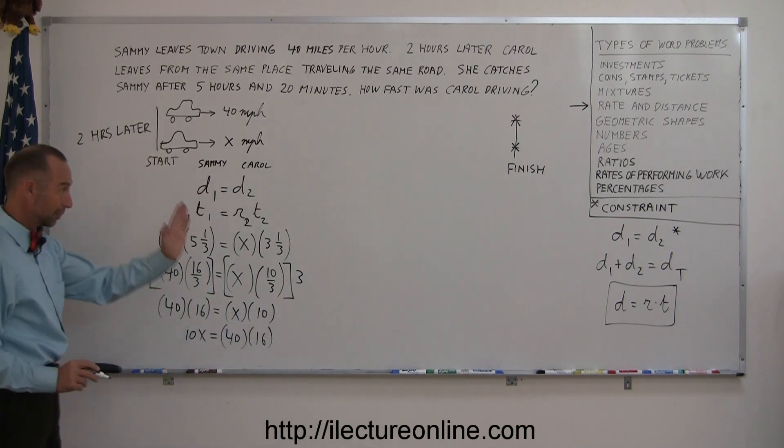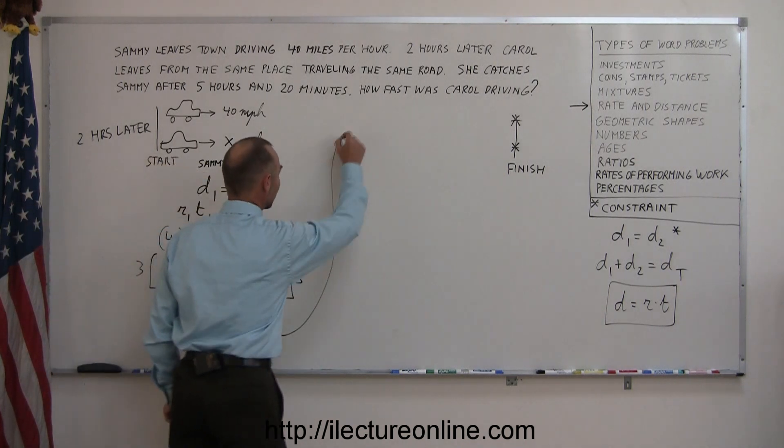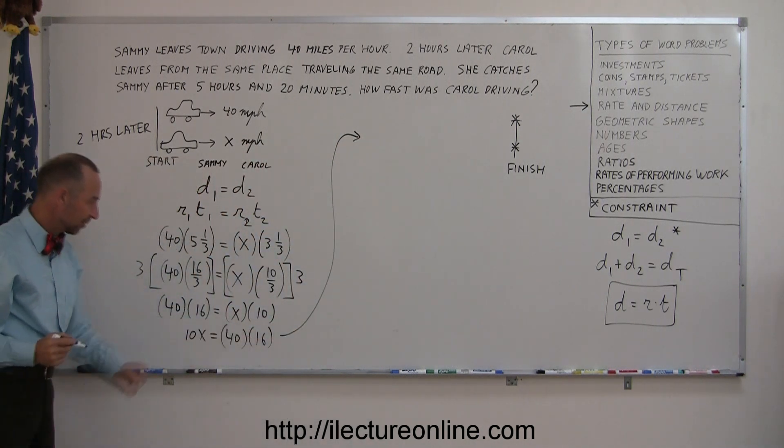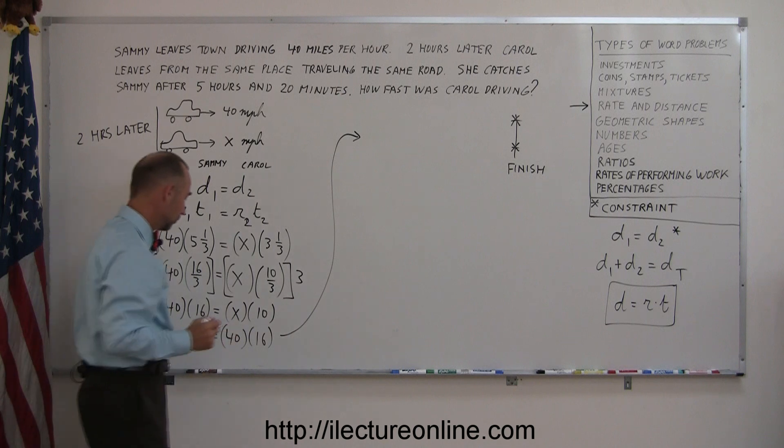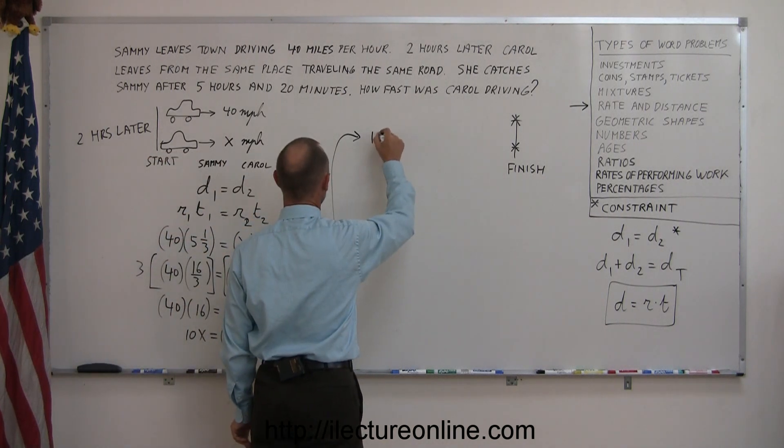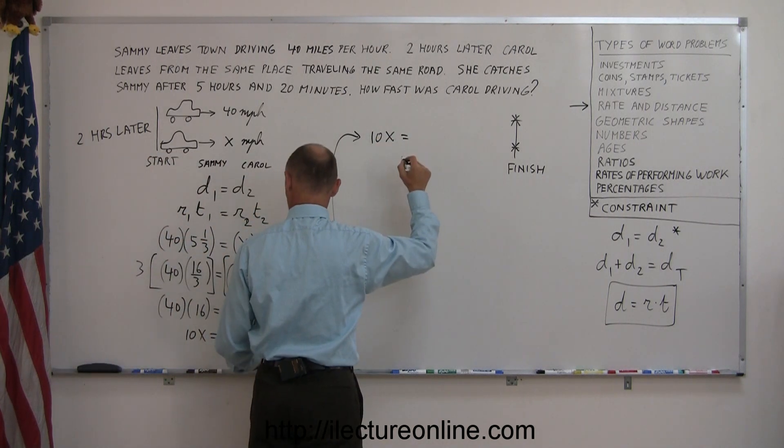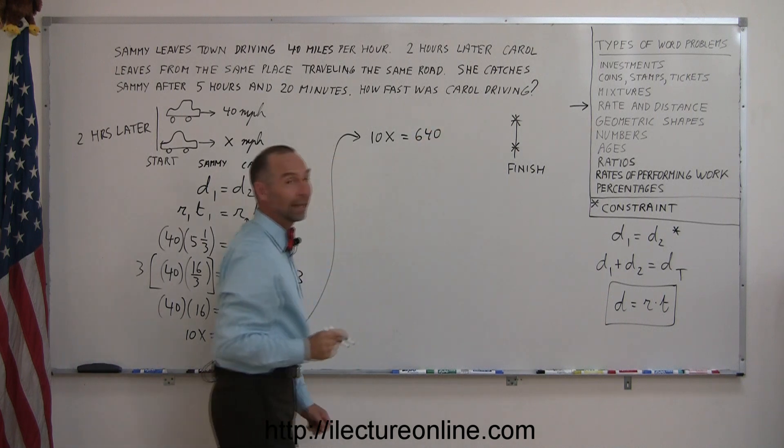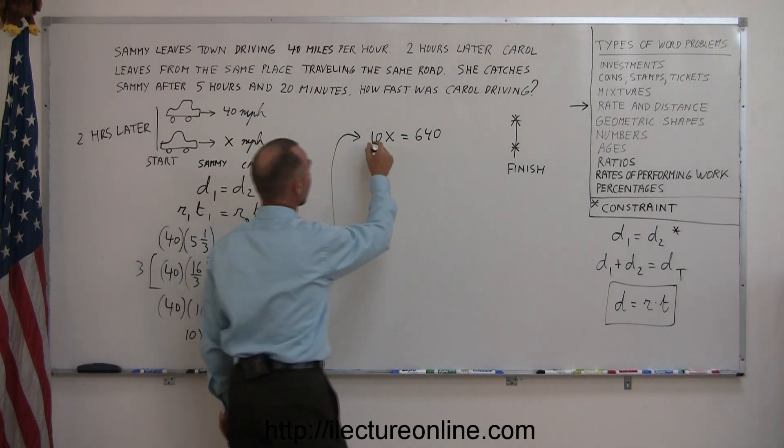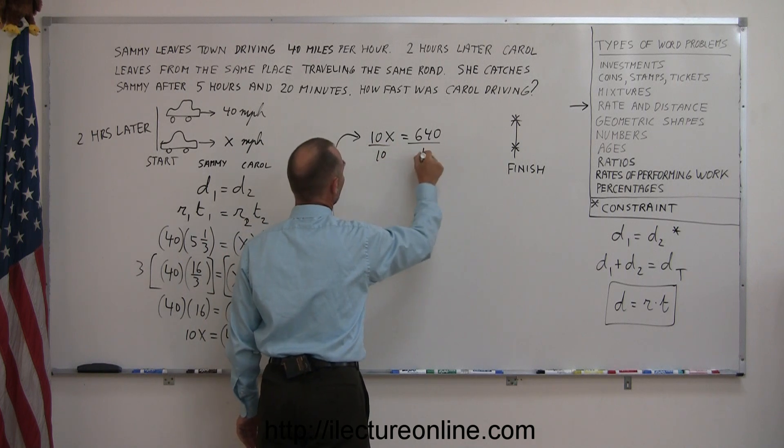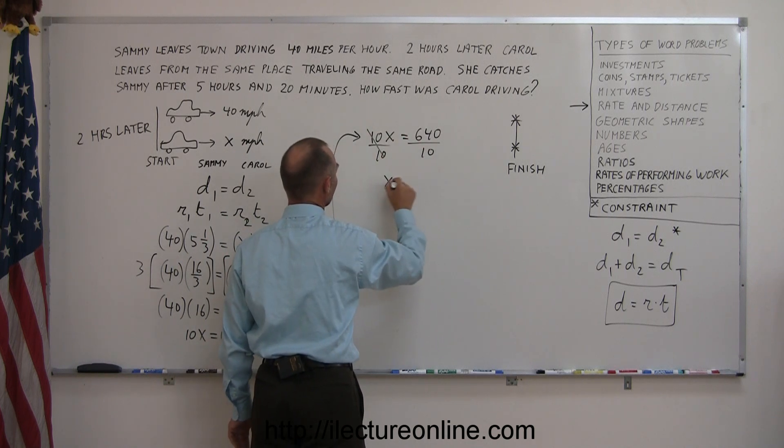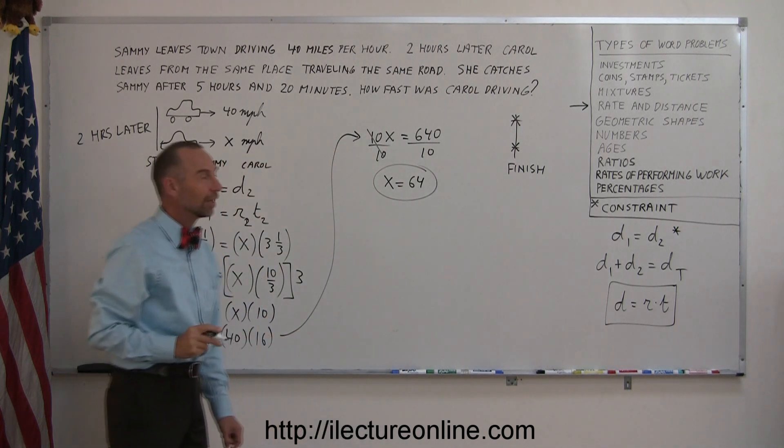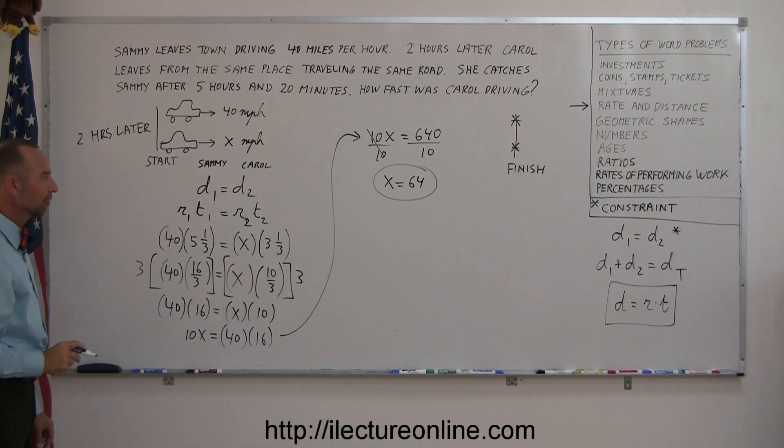I can switch the two around, so I can now write 10x is equal to 40 times 16. And since I'm running out of room here, I'm going to scoot right over to the other side of the board. I can multiply 40 times 16, 4 times 6 is 24, that's 640. So 10x is equal to 640. And now I can go ahead and divide both sides by 10. That cancels this, and I get x equals 64. So 64 is the rate at which Carol travels.